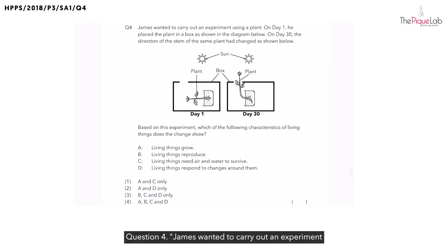Question 4. James wanted to carry out an experiment using a plant. On day 1, he placed the plant in a box as shown in this diagram. And then on day 30, he said that the direction of the stem of the same plant had changed as shown below. So based on this experiment, which of the following characteristics of living things does this change show us?